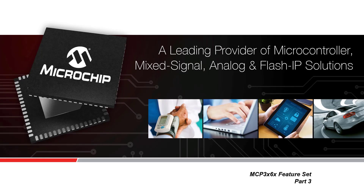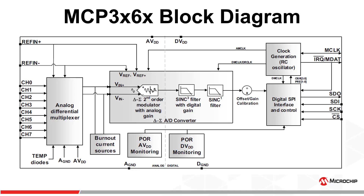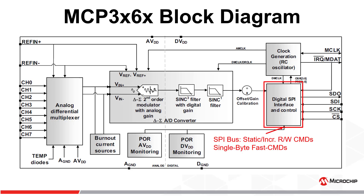Welcome to part 3 of the multi-part series discussing the feature functionality of Microchip's new MCP-3X6X family of Delta Sigma A to D converters. Some of the key features you'll find on the MCP-3X6X family of devices include an SPI interface supporting standard SPI modes 00 and 11 with static and incremental read-write commands, single byte fast commands for device reset, conversion start, and entering power saving states such as standby, shutdown, or full shutdown modes.